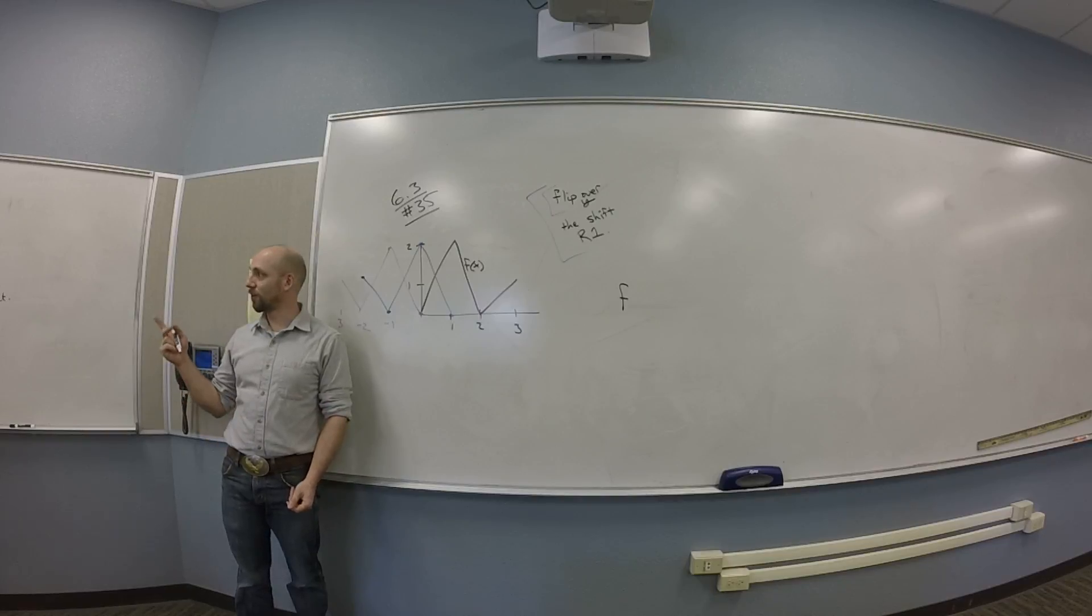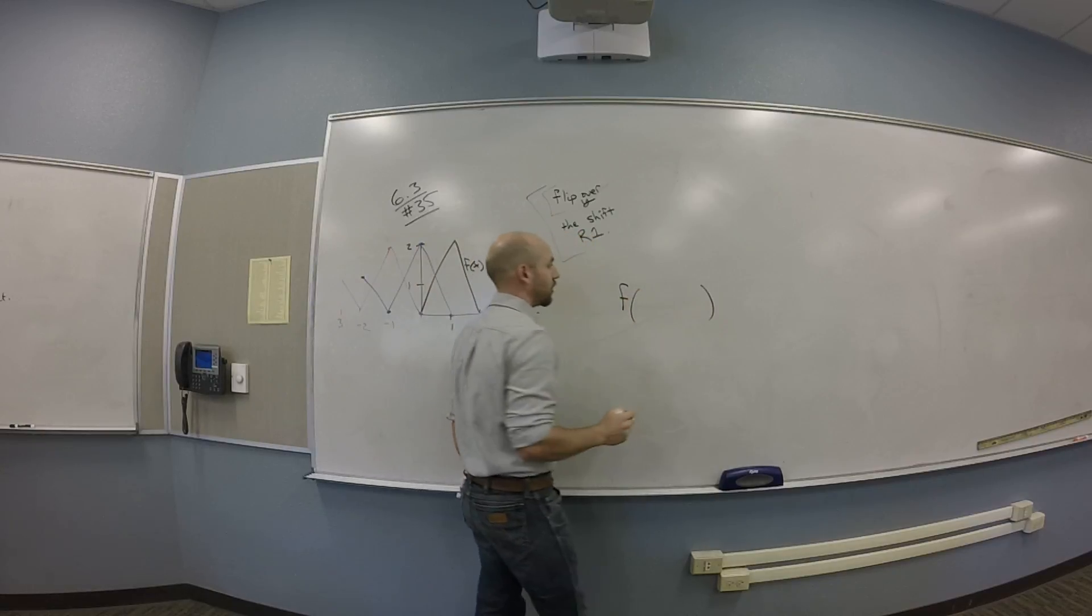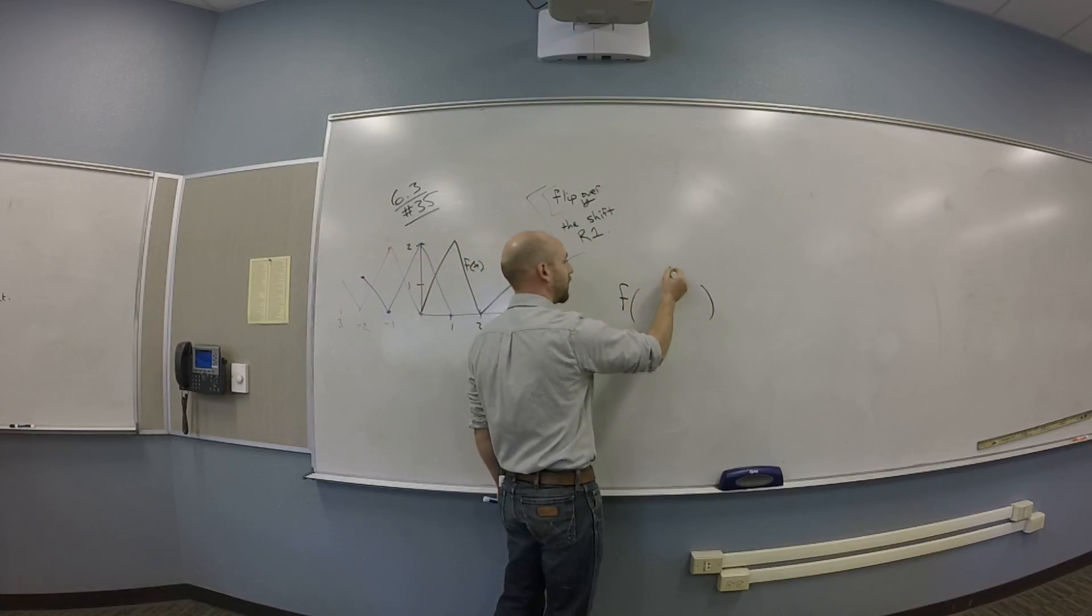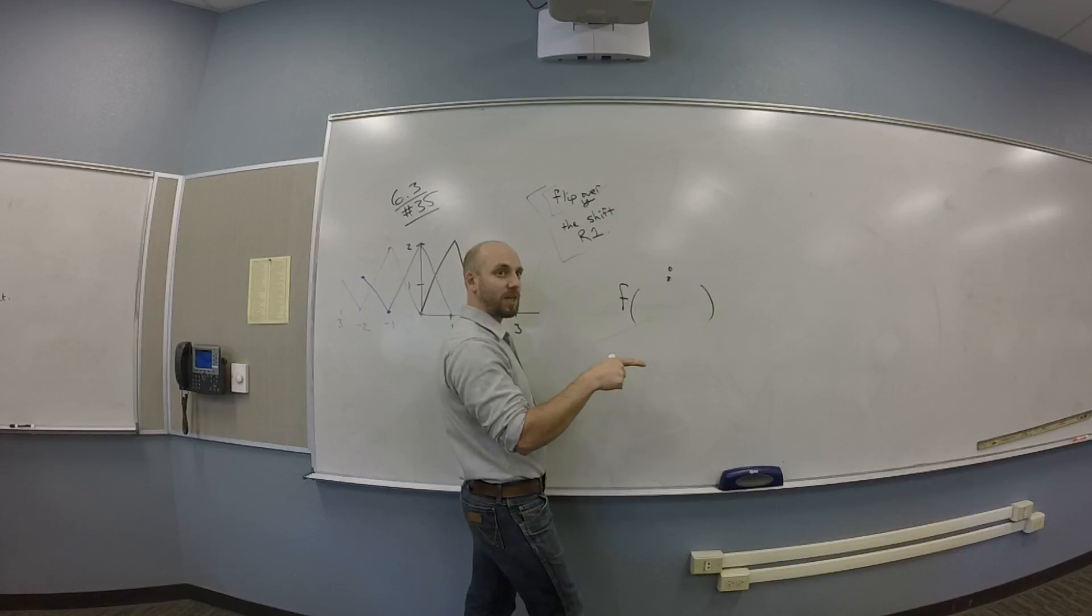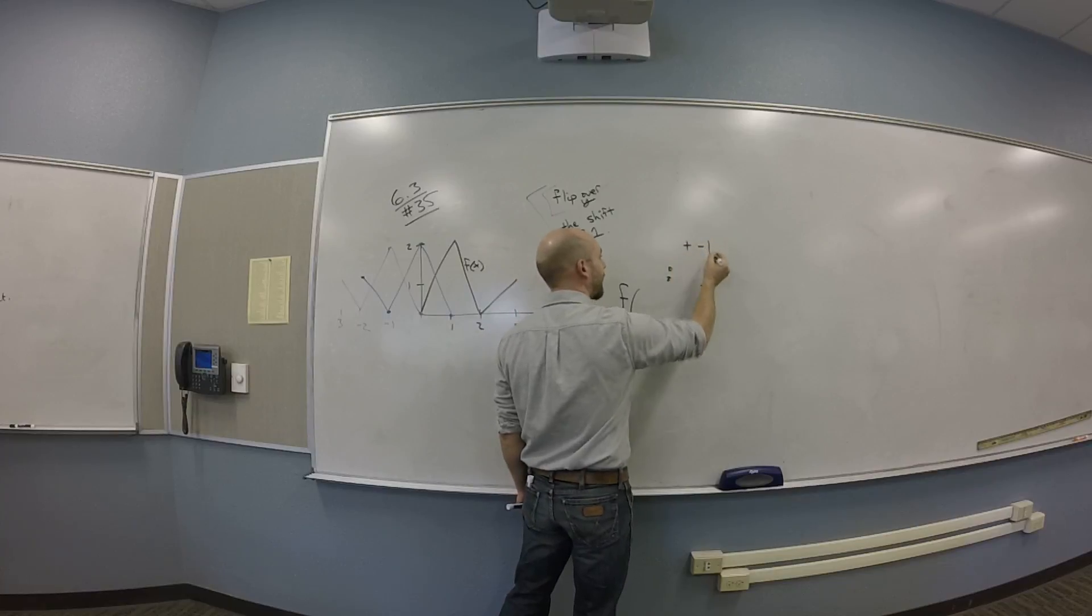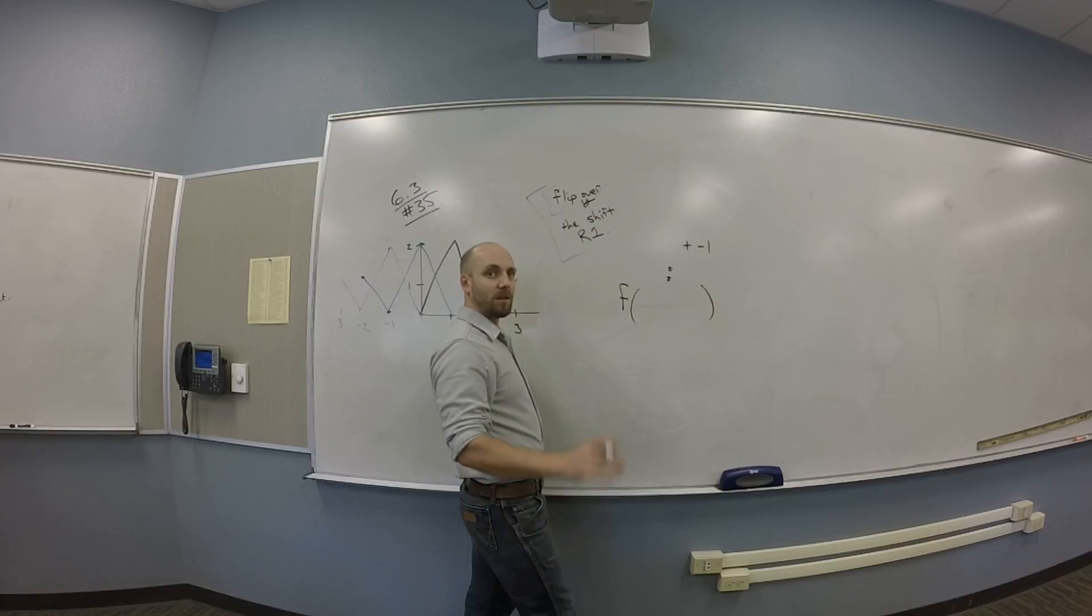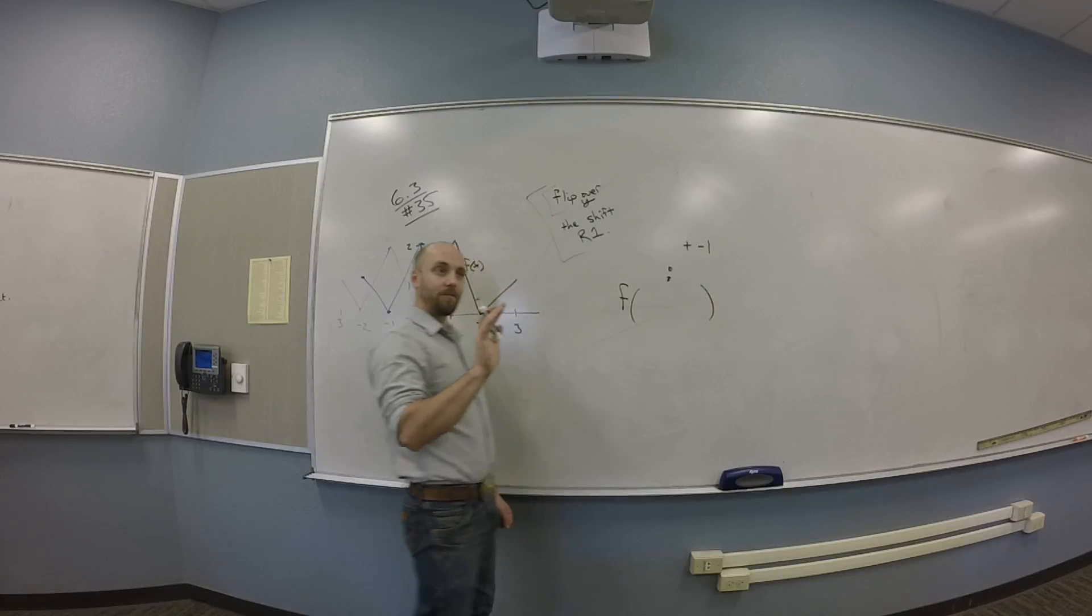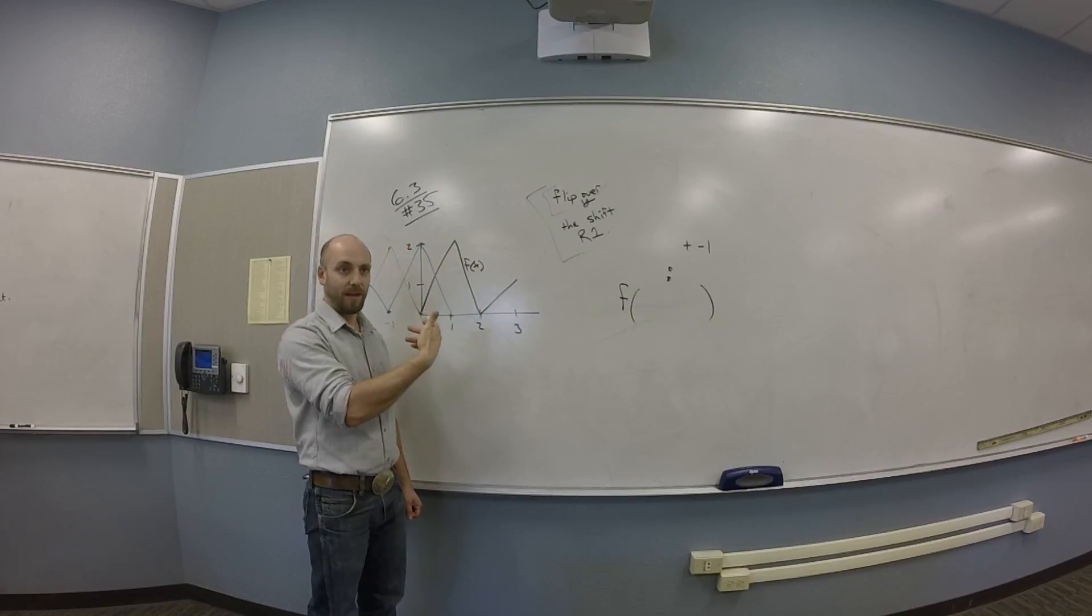And then I have to make sure that I get the two bits in the right order. So what are the two bits that are going to go in here? We're going to have an F for the one. There's going to be a shift right by 1, which is a negative 1. And what else? A flip over the Y axis, which is multiply the X by negative 1.